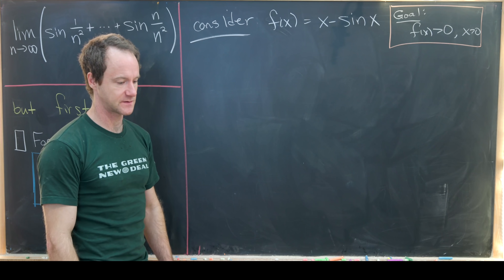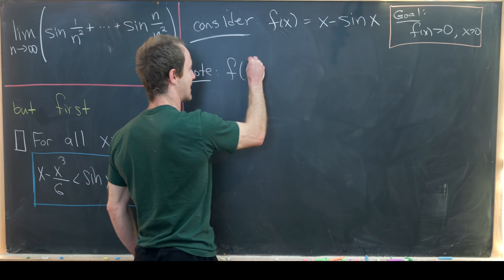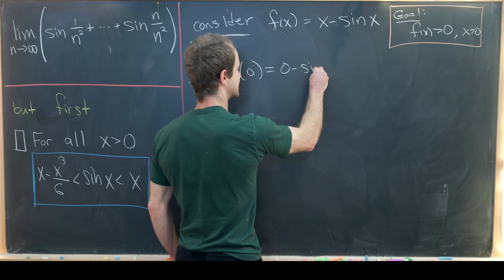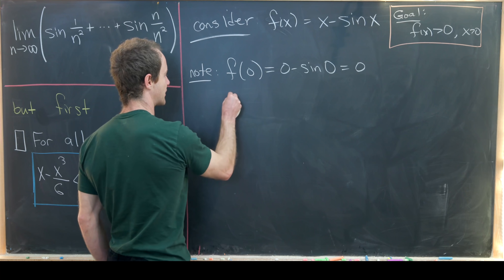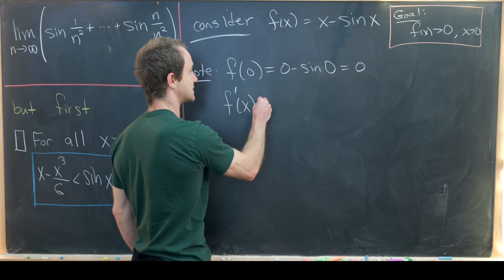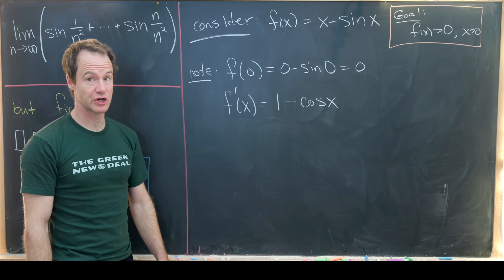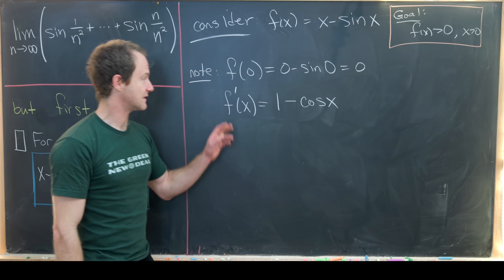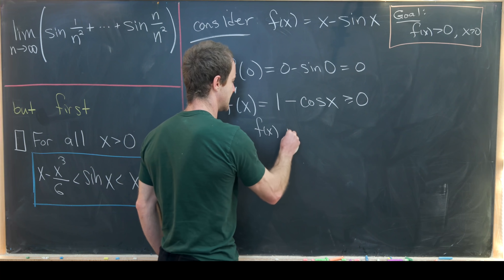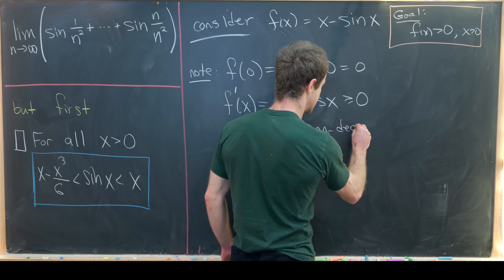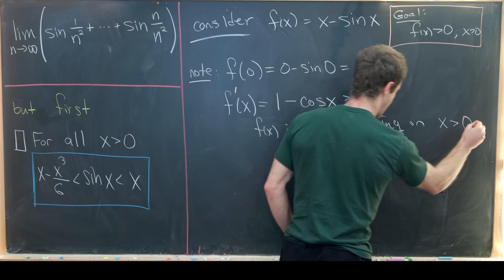We're going to use calculus. We begin by noticing that f evaluated at 0 gives 0 minus sine of 0, which equals 0. Then the derivative f prime of x is 1 minus cosine of x. Since the largest cosine can be is 1, this f prime is always greater than or equal to 0, meaning f of x is non-decreasing on the interval where x is bigger than 0.